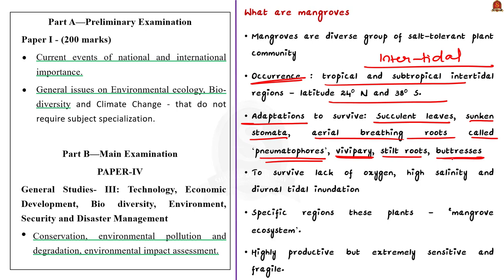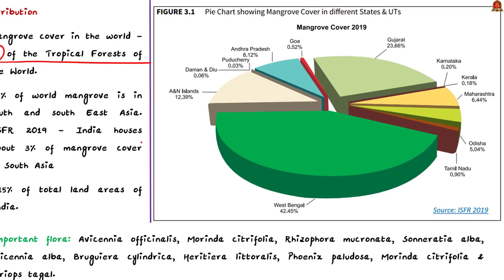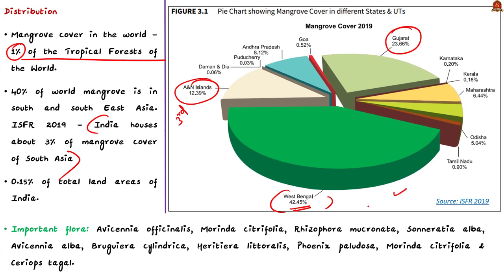Now let us see about mangrove distribution. The total mangrove cover in the world is 15 million hectares, which is 1% of the tropical forest of the world. 40% of world mangrove is in South and South East Asia. When it comes to India, it houses about 3% of the mangrove cover of South Asia. Within India, West Bengal has the highest mangrove cover at over 40%, followed by Gujarat at over 20%, and Andaman and Nicobar Islands has the third highest. Make note of these points — you can expect a statement on this in prelims.